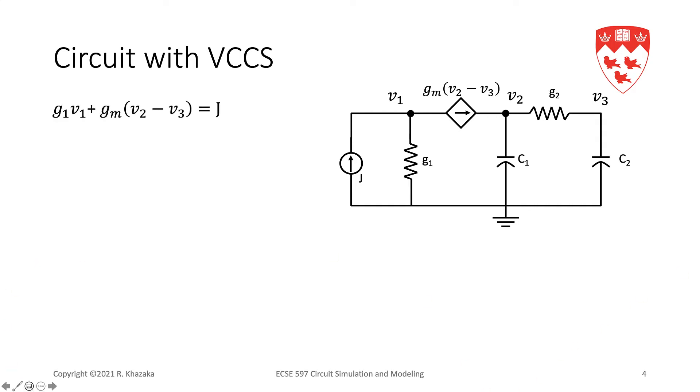Here we have the current in the resistor, G1 V1. We have the current in the controlled source, which is controlled by the voltage at V2 and V3. So, it's Gm V2 minus V3. And on the right-hand side, we will add the currents entering the node through the independent sources, and we have one of them. So, this is J. This is KCL at node 1.